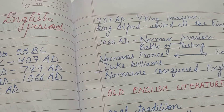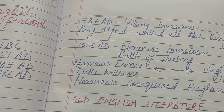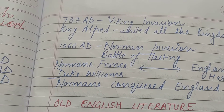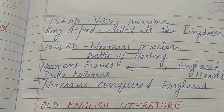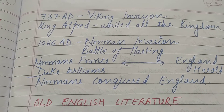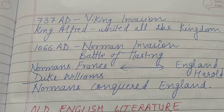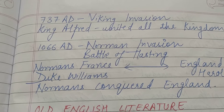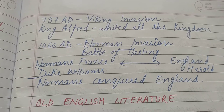737 AD mein Viking invasion hua, repeated invasion hua. Kaafi hissa Vikings ne attack bhi kar liya tha, but King Alfred — jo ki Wessex ke us samay raja hua karte the — unhone South Britain ke sabhi kingdoms ko ikatha kiya aur Vikings ko bahar nikalne ke liye poori koshish ki. Ultimately Vikings England se bahar chale gaye aur King Alfred ki vijay hui.